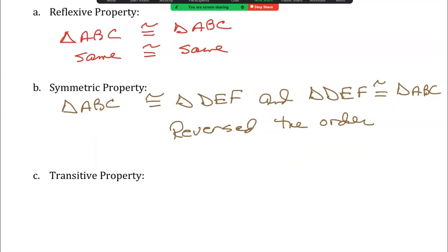We have one last one, the transitive property. In that situation, I need three triangles. So I'll say triangle ABC is congruent to triangle DEF, and triangle DEF is congruent to triangle PQR.